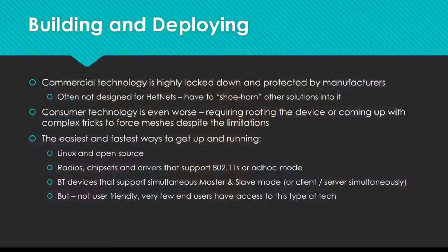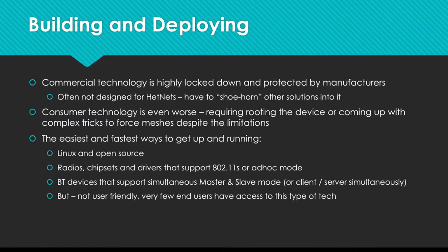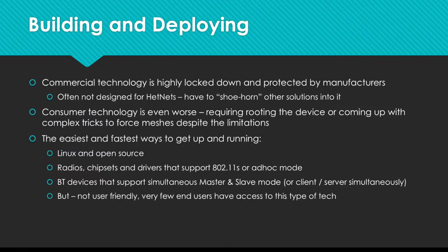When it comes to building and deploying these types of things in research labs, commercial technology is usually really locked down and protected by manufacturers. It's also often not designed for hetnets, so you usually have to shoehorn things into working, and consumer technology like Android and iOS phones is even worse. If you want to do hetnets and mesh nets on them, you usually have to root the device or come up with complicated tricks. The easiest and fastest way to get up and running with a mesh is using Linux and open-source tools, like Raspberry Pis using radios and chipsets and drivers that support 802.11s — the mesh standard from IEEE — or ad hoc mode.